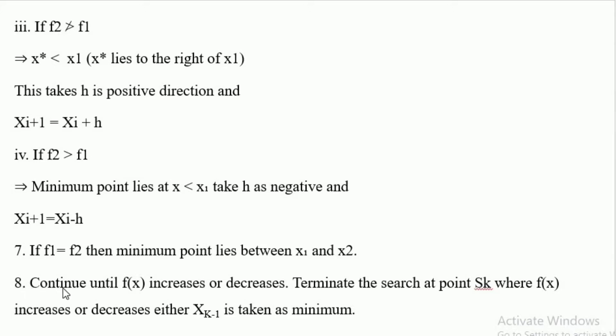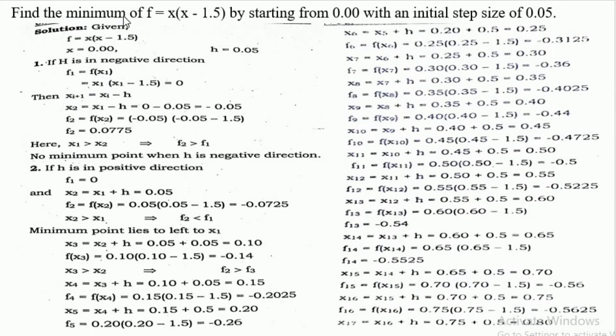The seventh step: if f1 equals f2, then the minimum point lies between x1 and x2. The eighth step: continue until f(x) increases or decreases, then terminate the search at point xk where f(x) increases — either x(k-1) is taken as minimum. Now the example: find the minimum of f(x) = x(x − 1.5), starting from 0.00 with an initial step size h of 0.05.